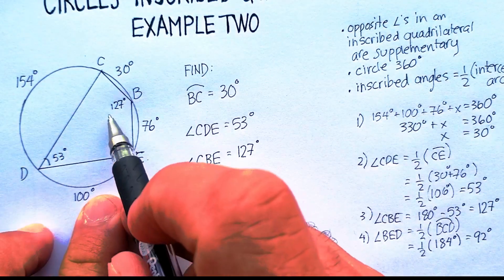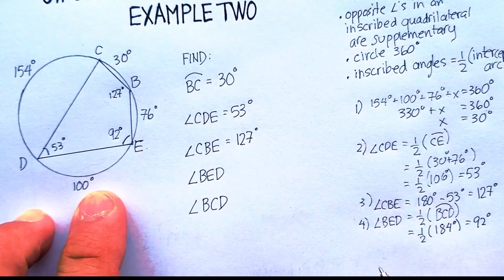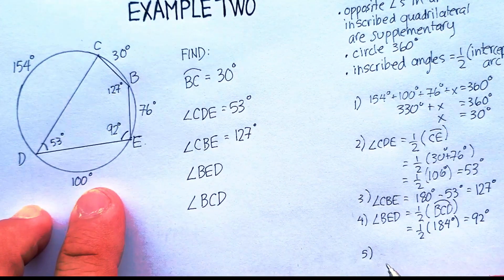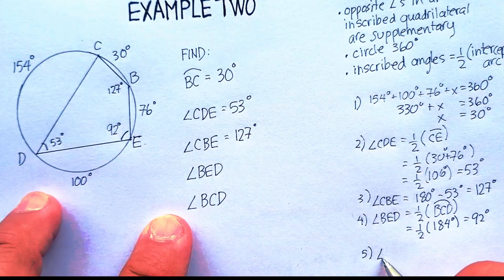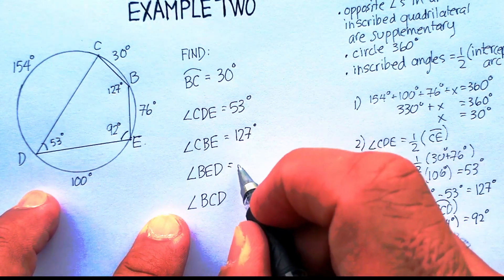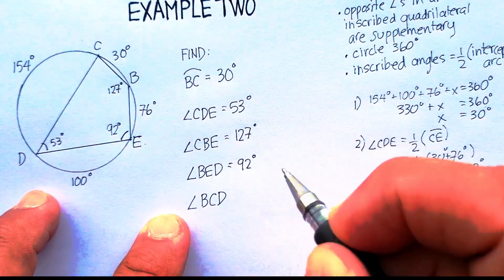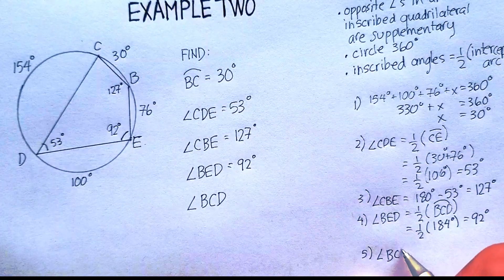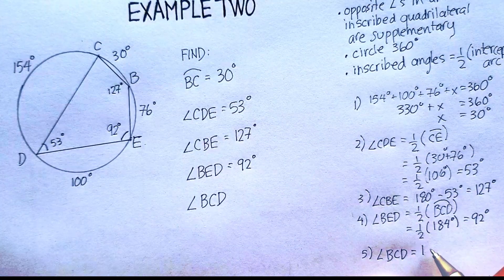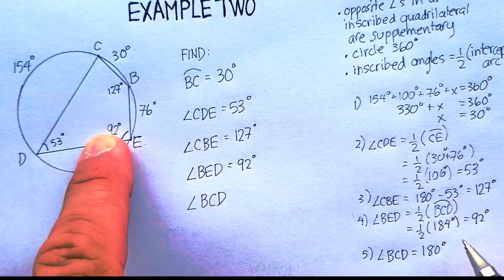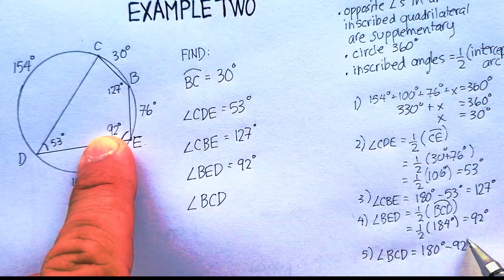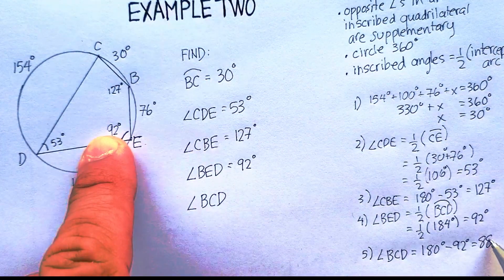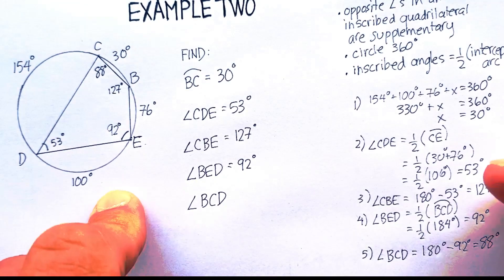And the opposite angle is going to end up being supplementary. So angle BCD is going to be equal to 180 minus the 92 or 88 degrees.